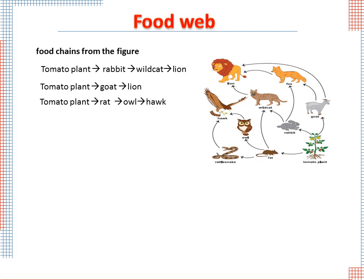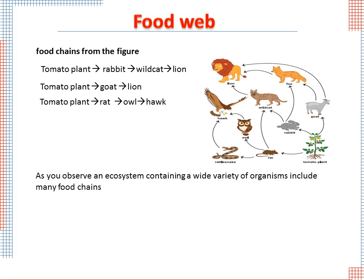Another example: the tomato plant is eaten by the rat, the rat is eaten by the owl, and the owl is eaten by the hog. A food web shows how food chains overlap. An ecosystem containing a wide variety of organisms includes many food chains, and all the interrelated food chains in an ecosystem form a food web.